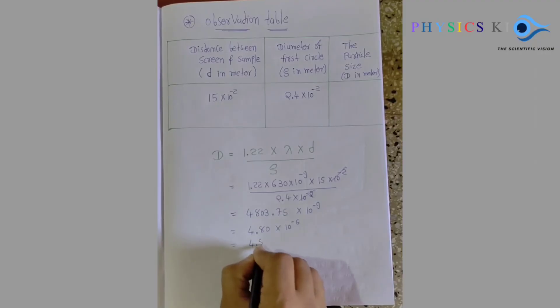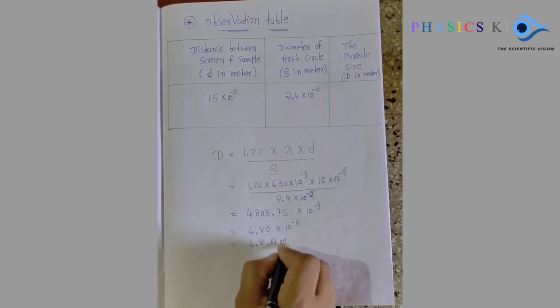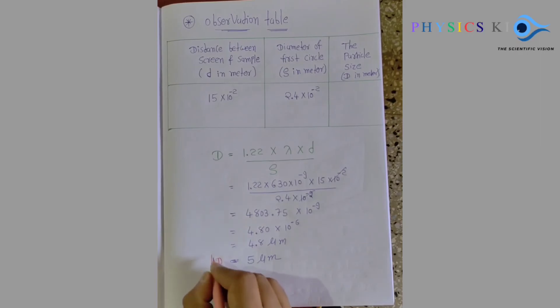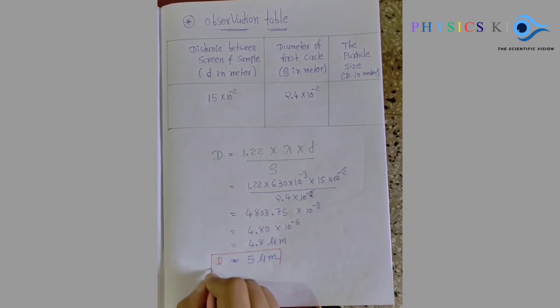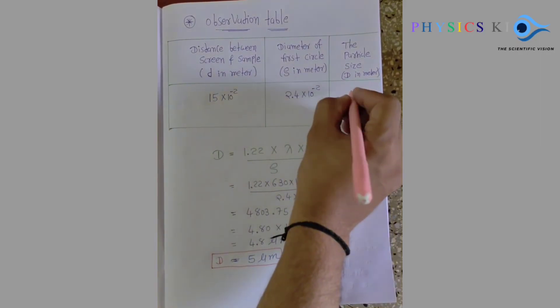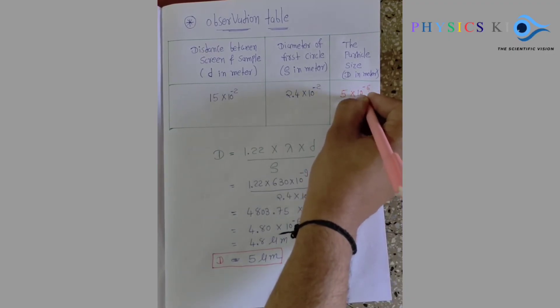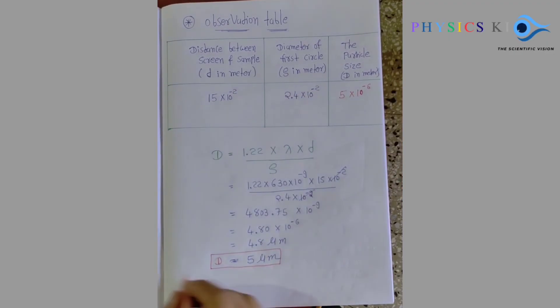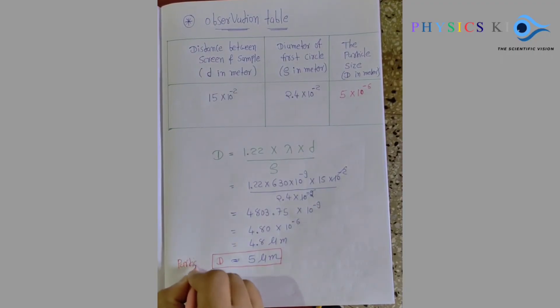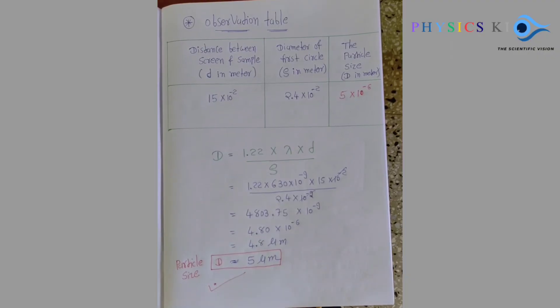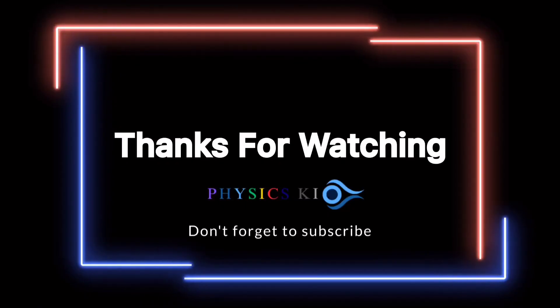10 to the power minus 6, it means micro, so 4.8 micrometer. So this is my answer - particle size. I got the particle size which is nearly 5, 4.8 or 5 micrometer. So this one is my final result: lycopodium particle size is 5 micrometer. Thank you.